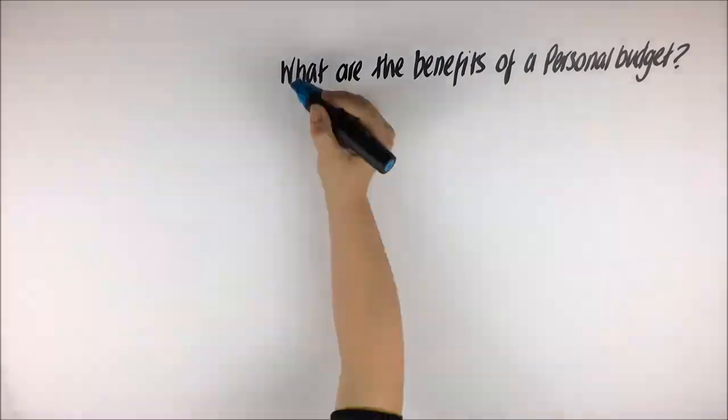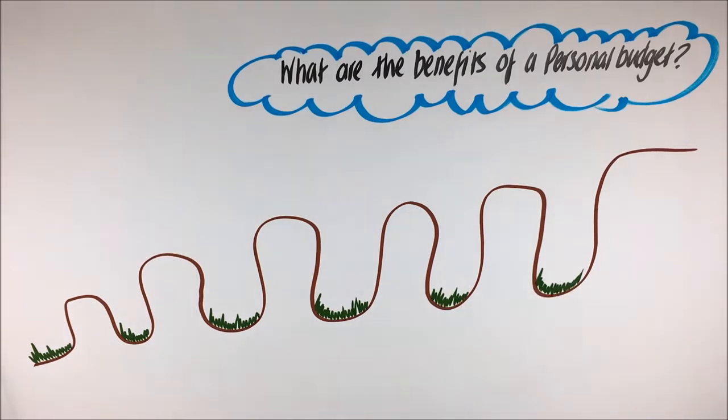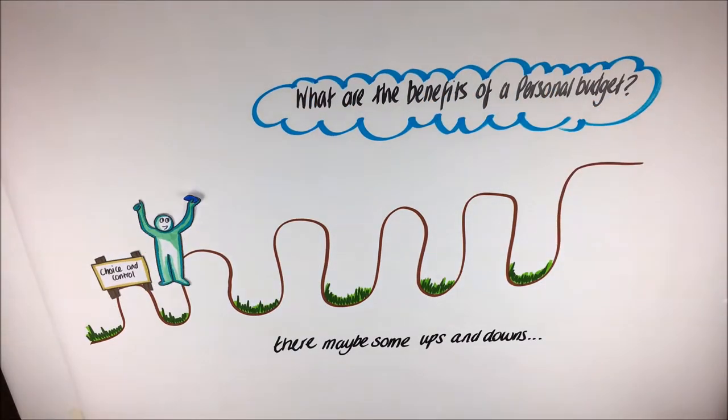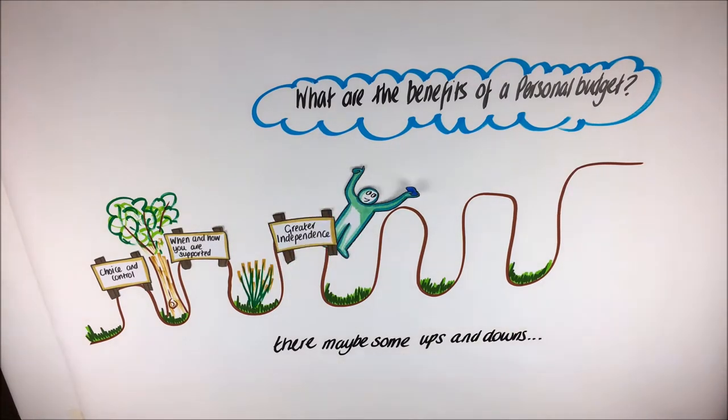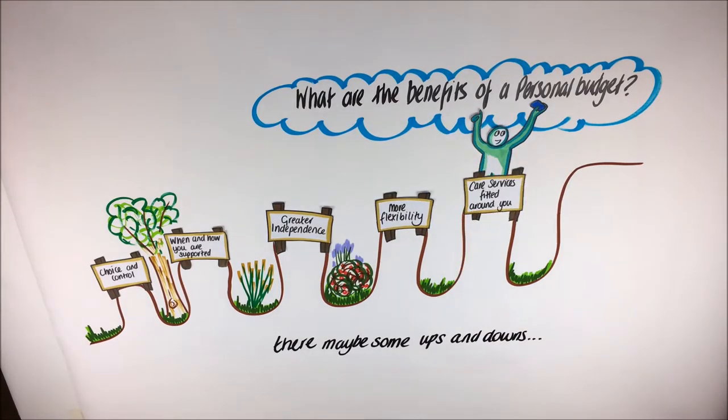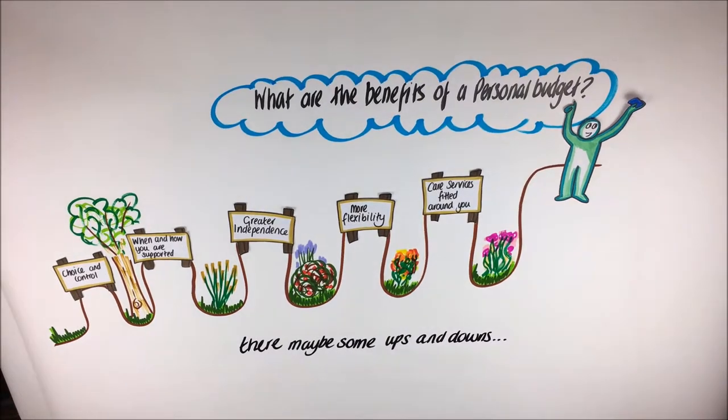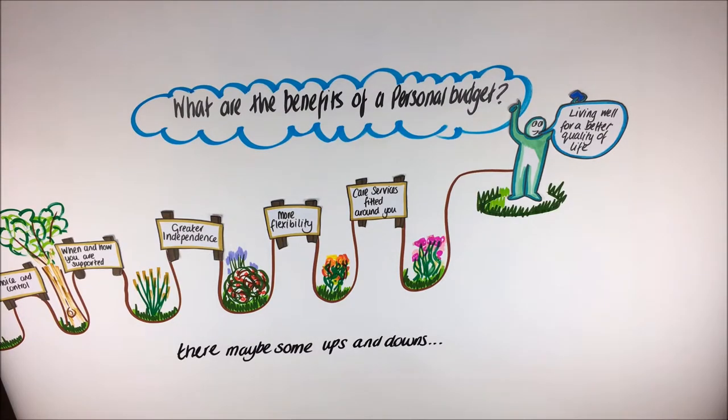What are the benefits of having a personal budget? There may be some ups and downs on your journey through services. However, using a direct payment with a prepaid card will mean that you are making the decisions about when and how you are supported and how you live your life. You will have more choice and control about who supports you and how they provide the support you need. You will have greater independence and more flexibility in the way your care is managed. Care will be fitted around you, and this will help you to live well for a better quality of life.